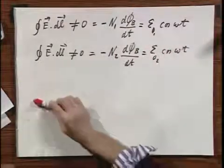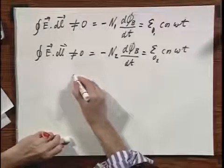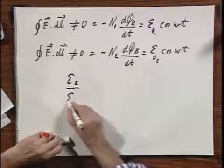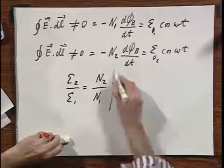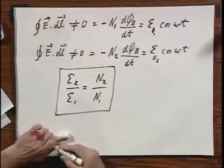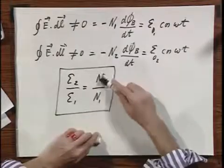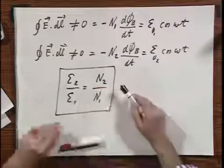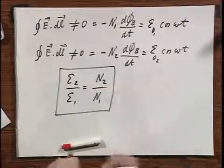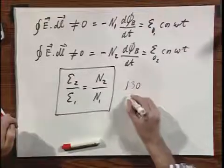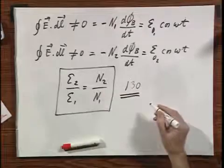It follows immediately by taking the ratio of these two that E2 divided by E1 equals N2 divided by N1. In the ideal case, this gives you enormous insight: if you have a ratio of windings of 1000 to 1, you can step up the voltage by a factor of 1000. In our particular case, this ratio is 130, so we step up the voltage by a factor of 130.